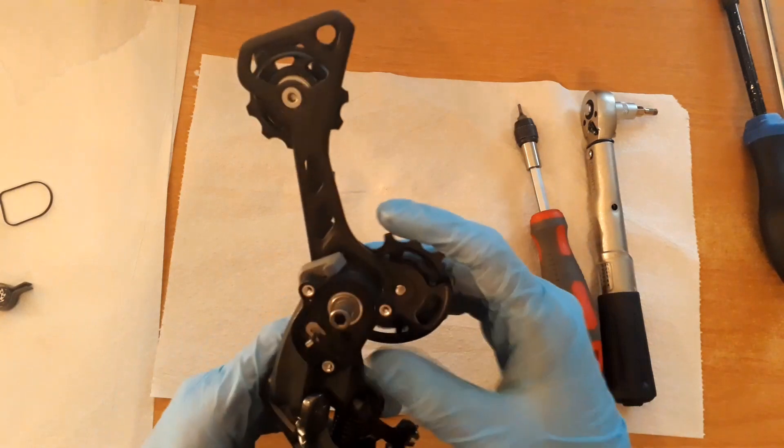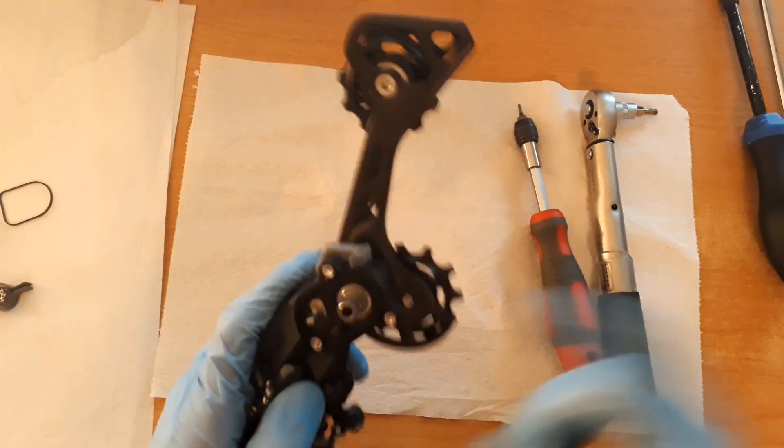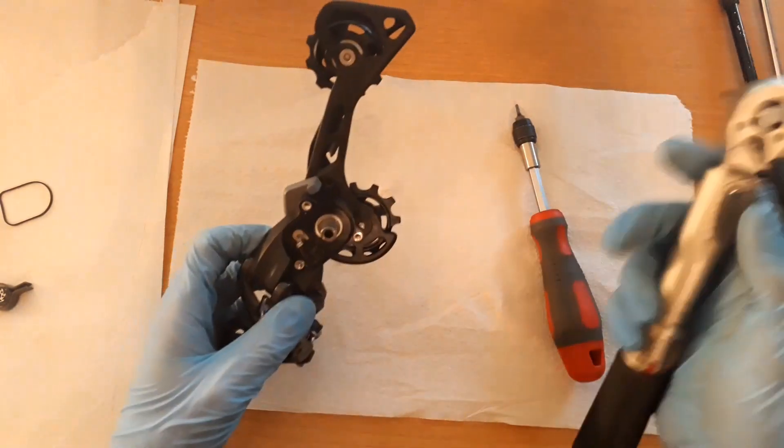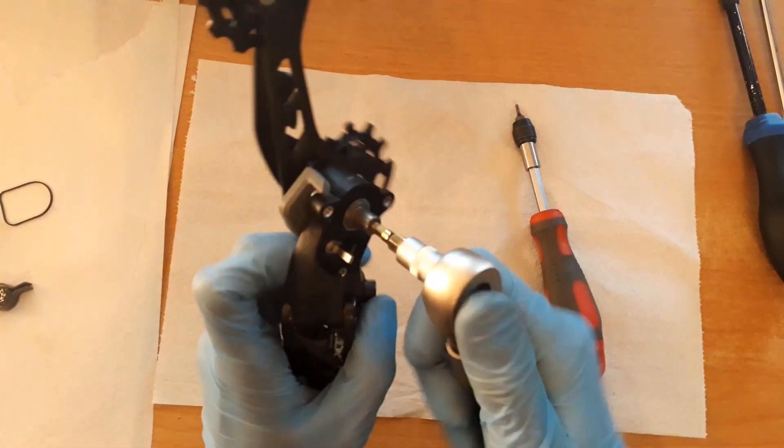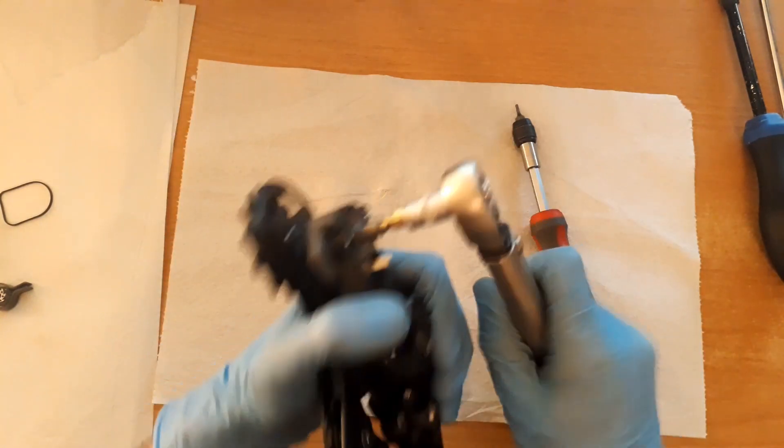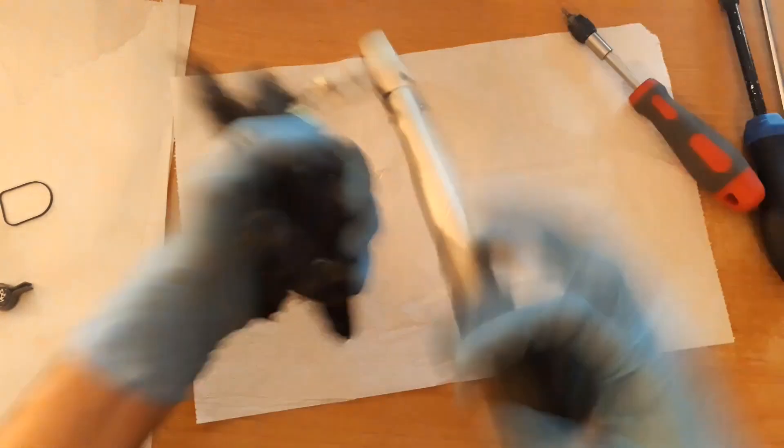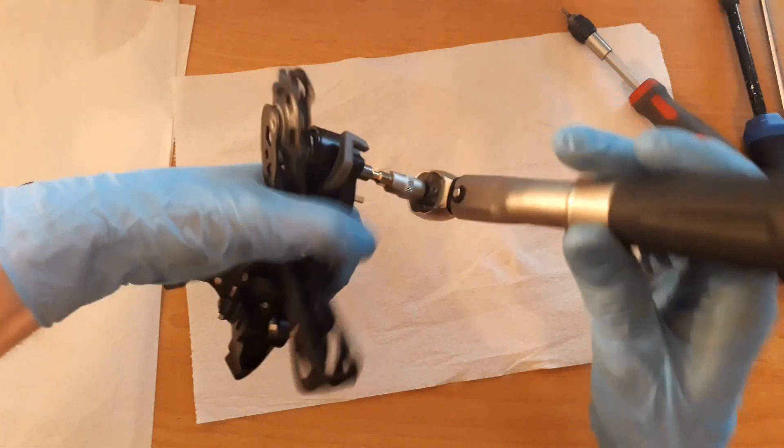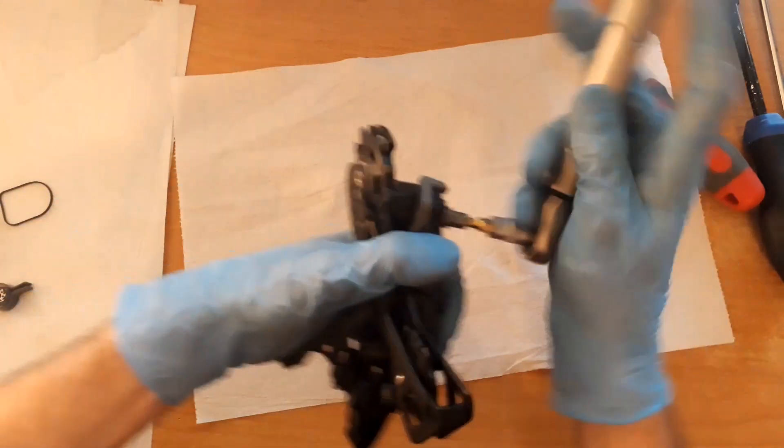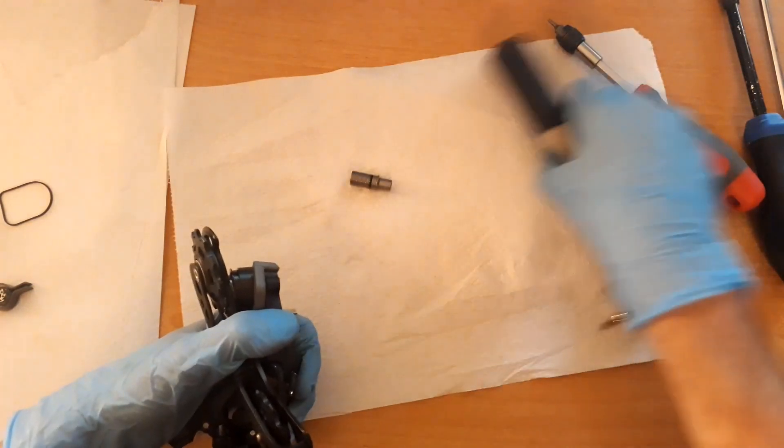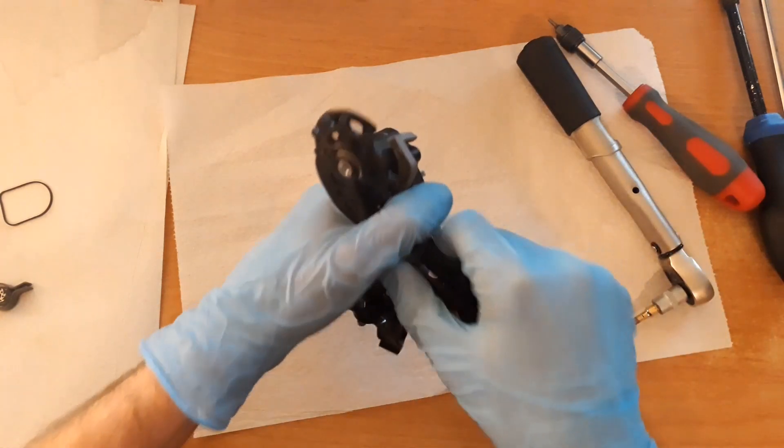And now we can remove the screw that holds the cage to the rest of the derailleur. Use the 4mm allen key for that. Note that the spring here will want to move the cage away.